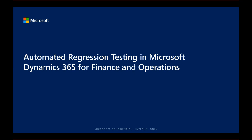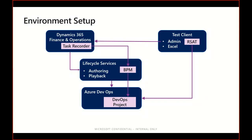Welcome everybody. In this second part of the tech talk regarding automated regression testing, in the first part we talked about environment setup. We explained that we have Lifecycle Services connected to our Azure DevOps, and we have a Dynamics Finance and Operations environment which we're going to use for task recording and saving our recordings to the BPM. BPM will then generate test cases in our Azure DevOps project, and as a last step we set up the Regression Suite Automation Tool software on our test client.